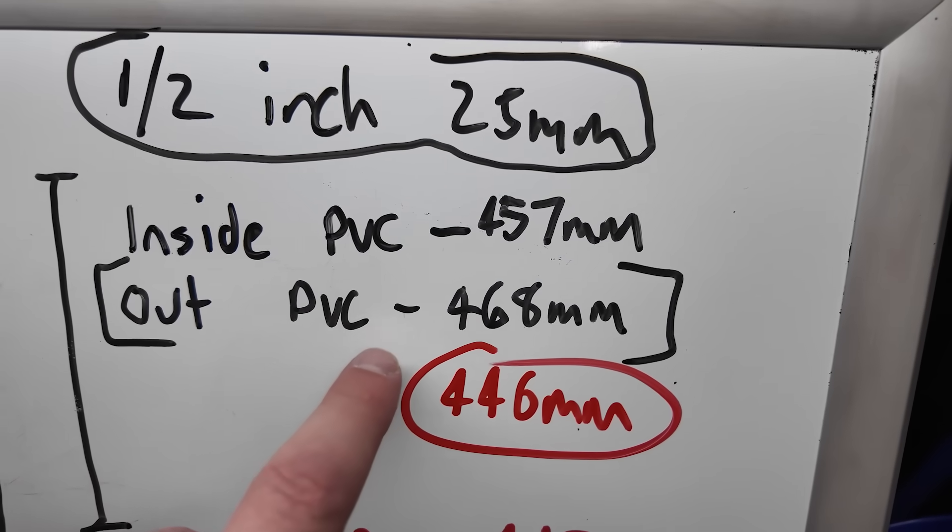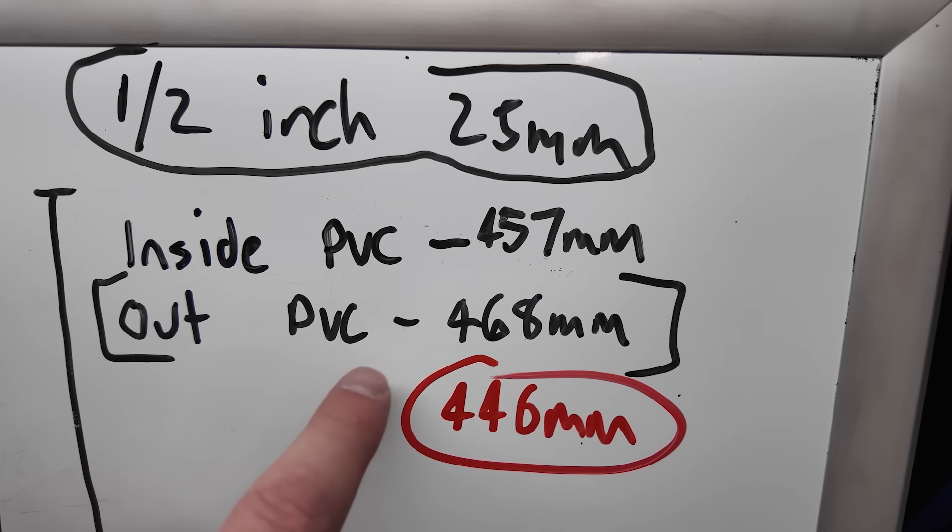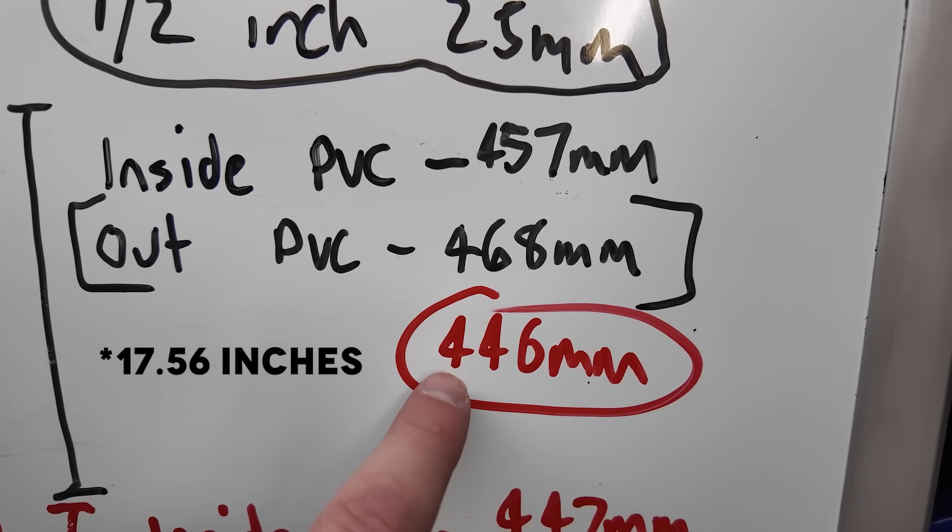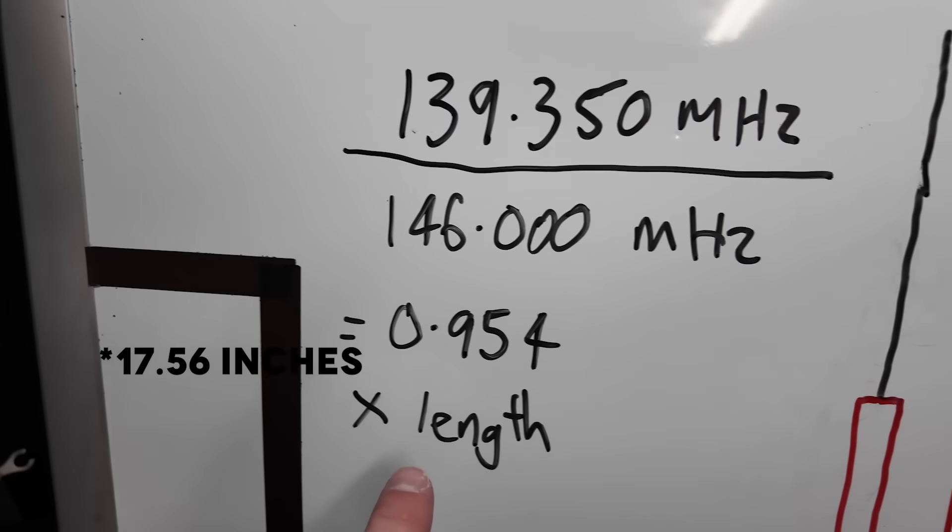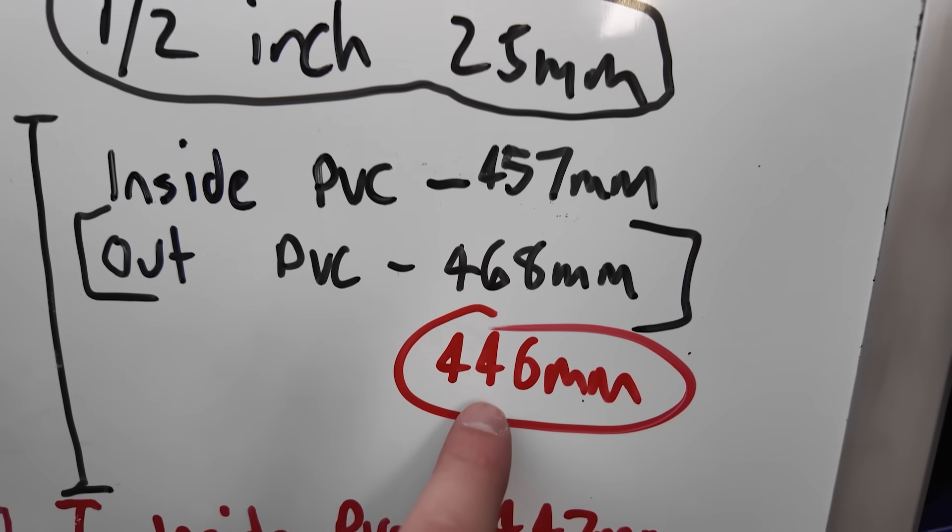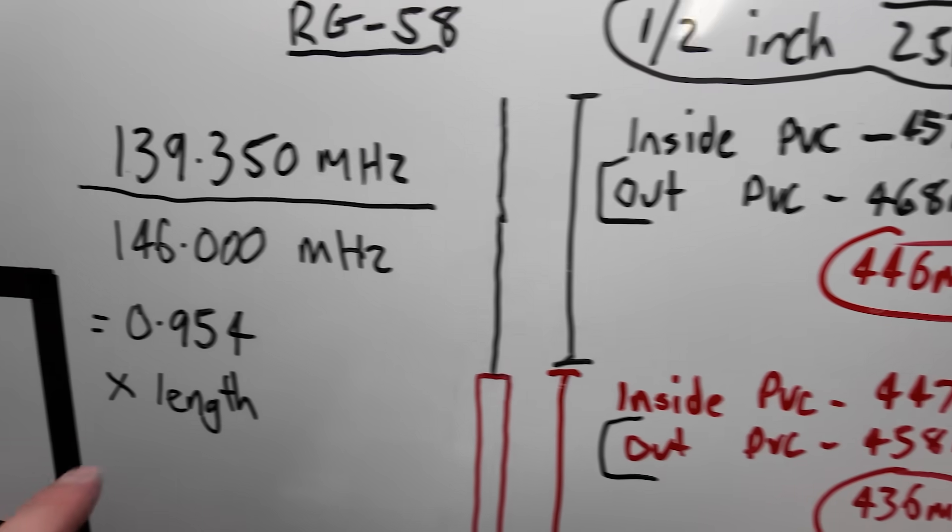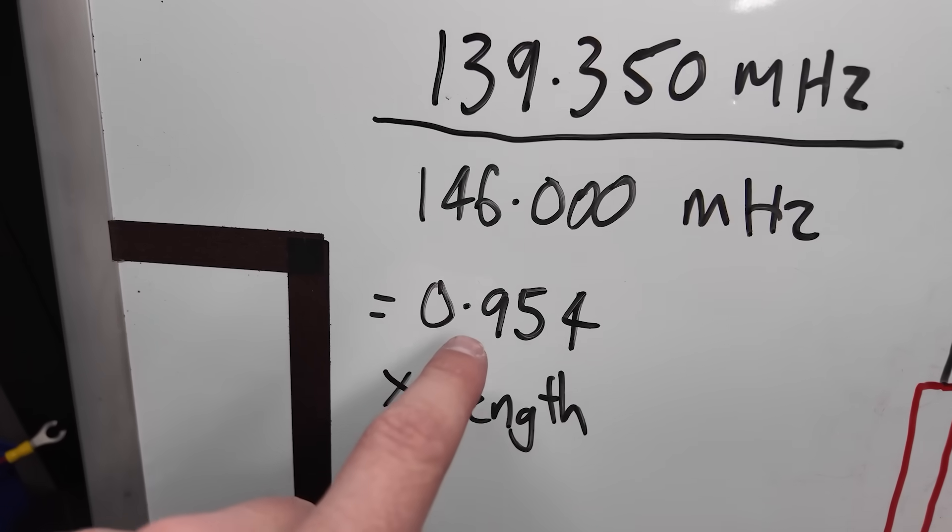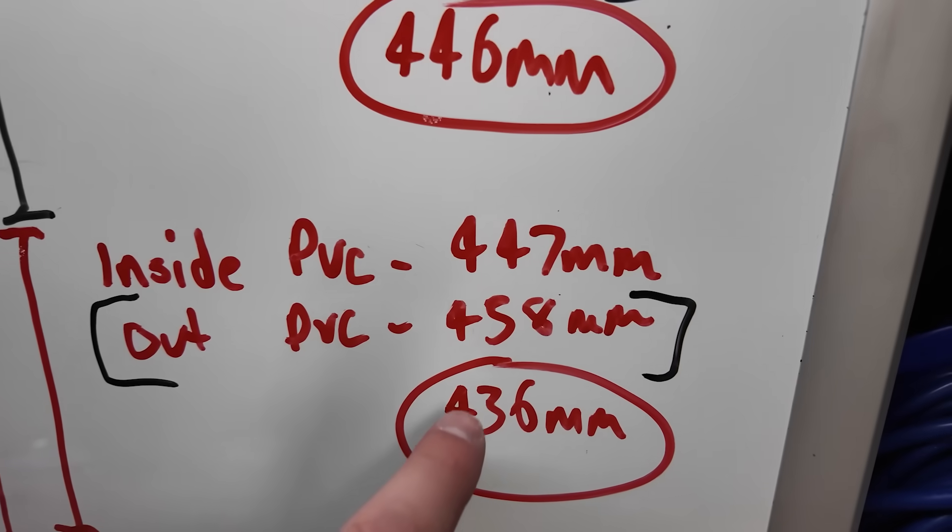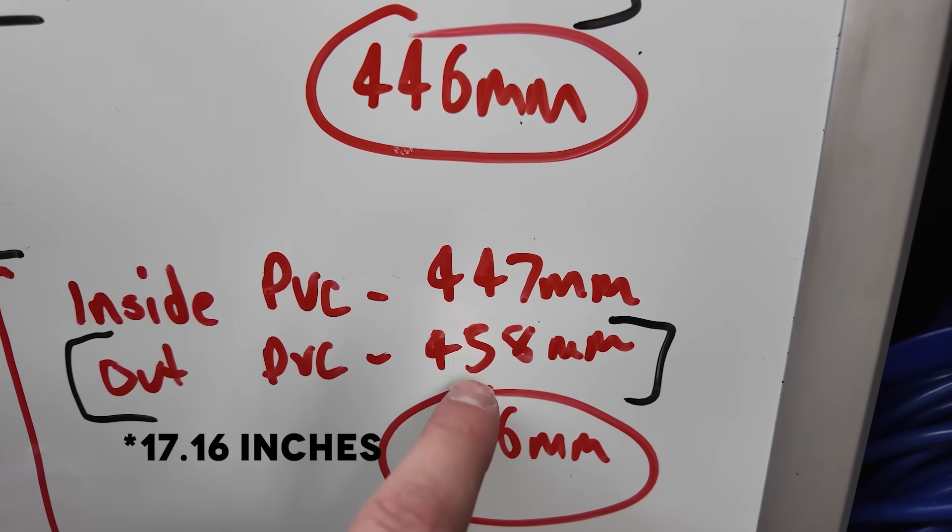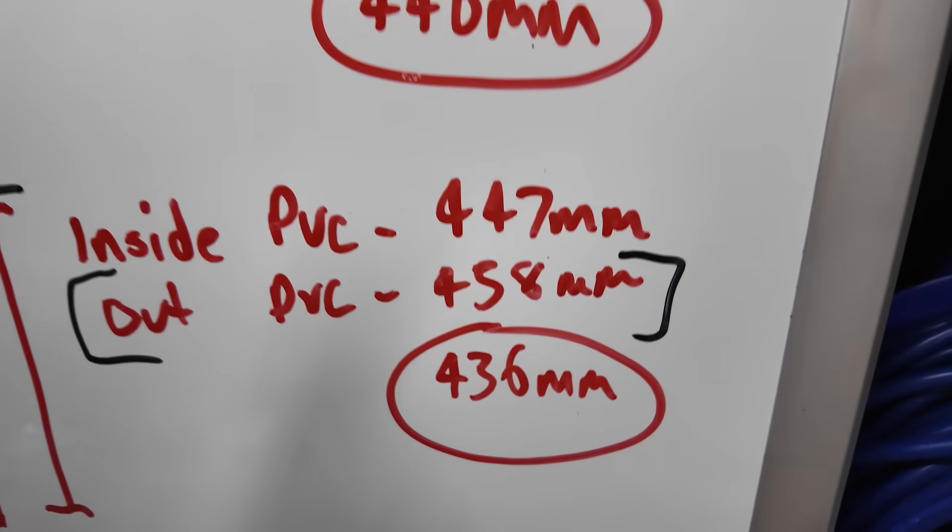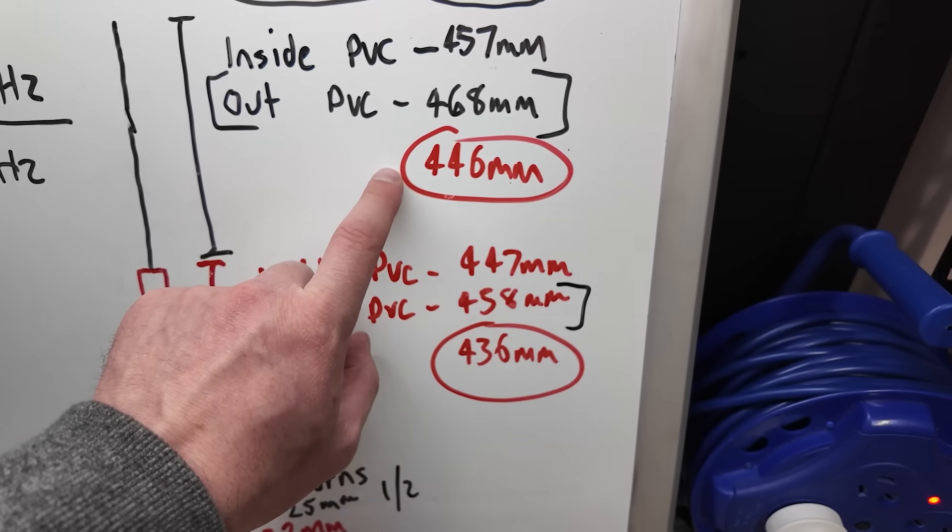So the current length that we had for the outside PVC measurement was 468. So that means that I need to reduce it down to 446. So I've done 0.954 multiplied by 468 equals 446. So that's the top element. So then the bottom element, we do 0.954 multiplied by our measurement, which is 458, and we should get 436. So our two new measurements, top element 446, bottom element 436.